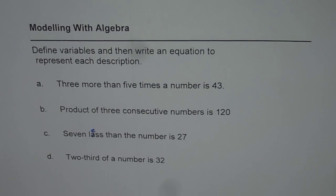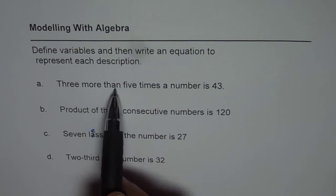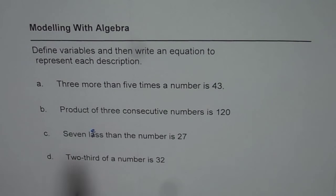Now in all these four statements what we observe is that our variable should be defining a number. We have 3 more than 5 times a number is 43. So in general let me define the number itself.